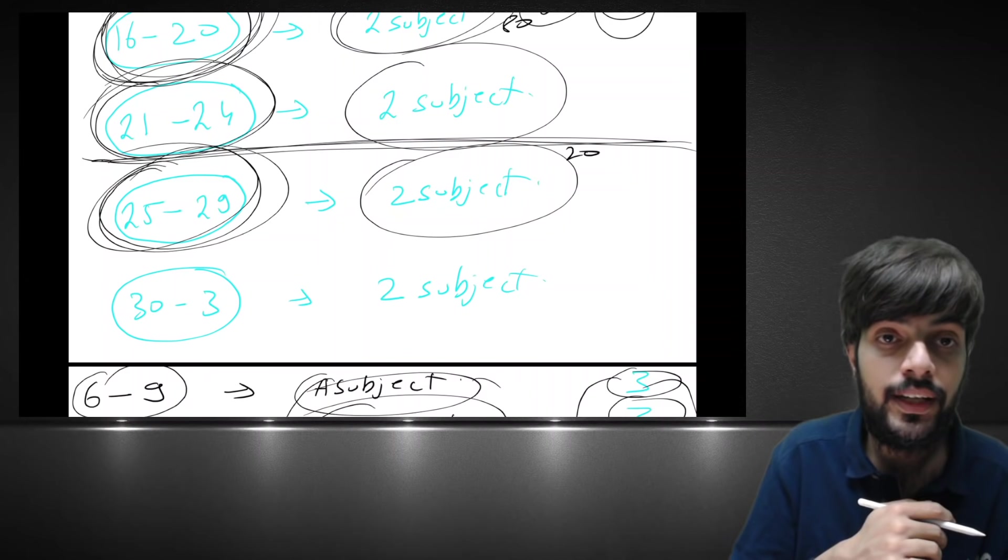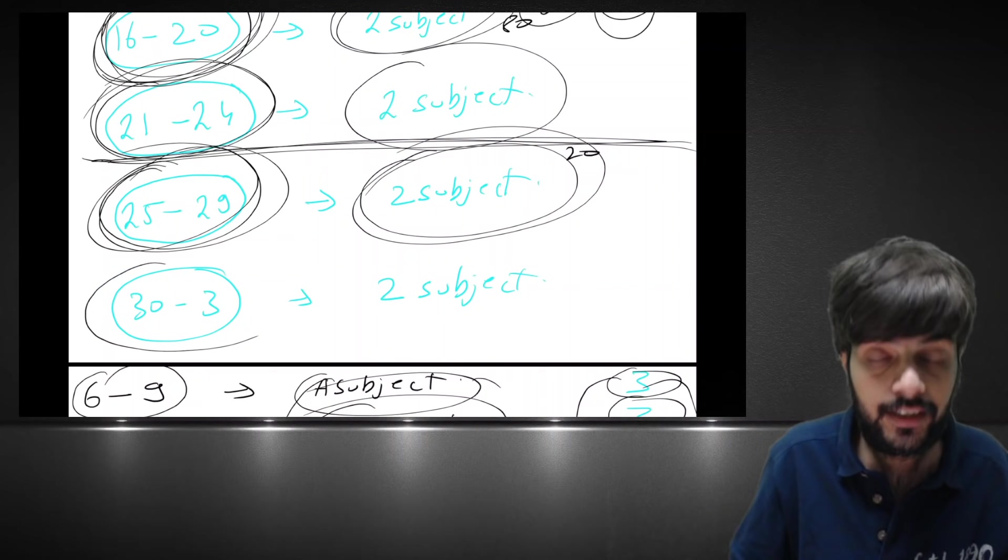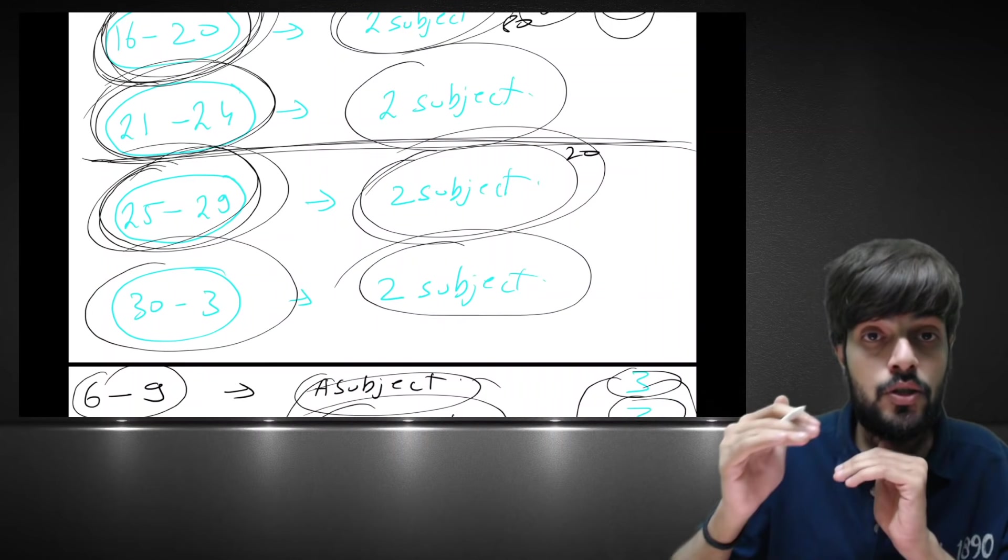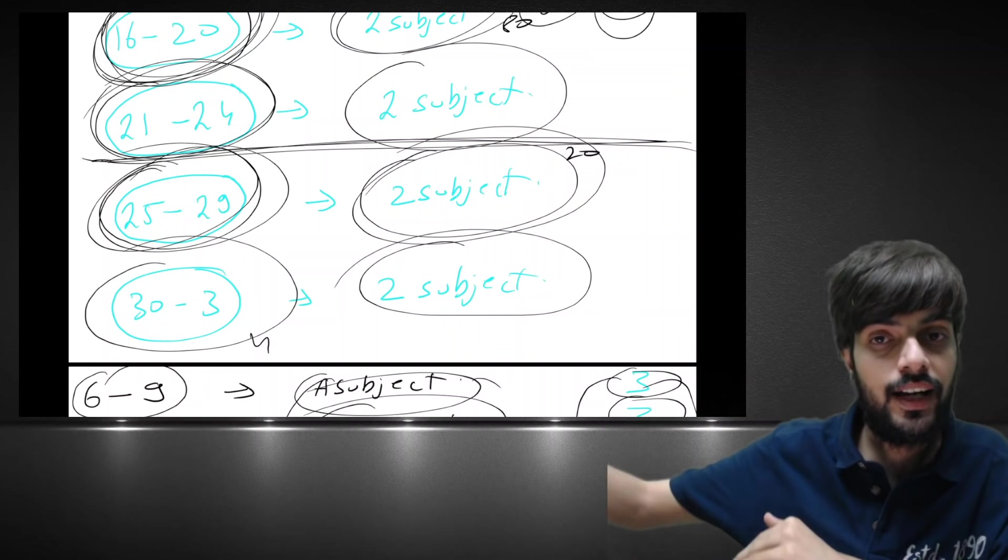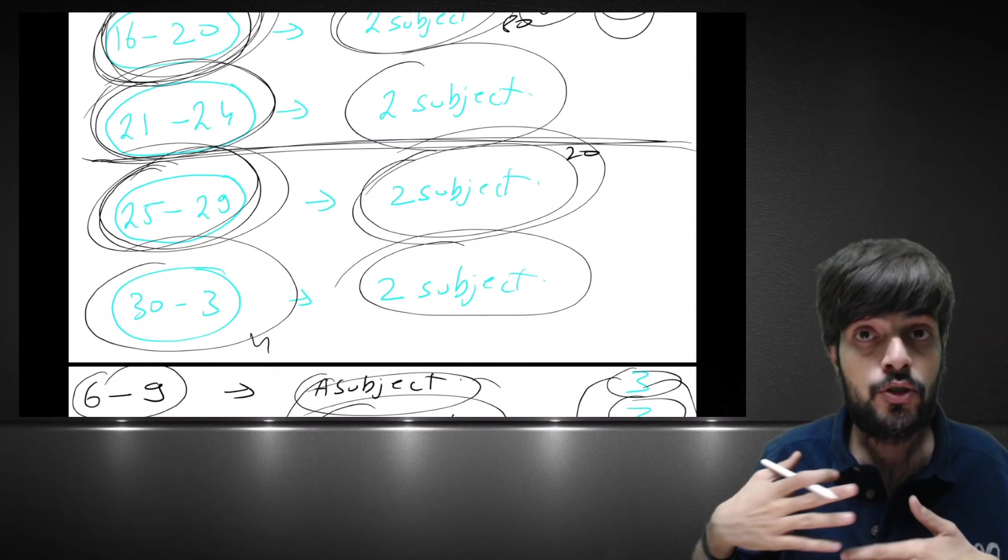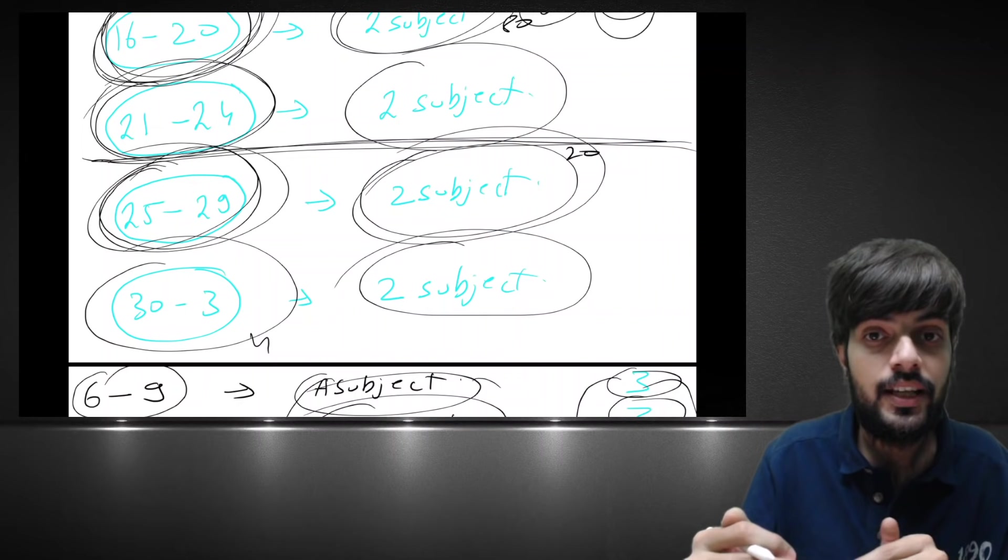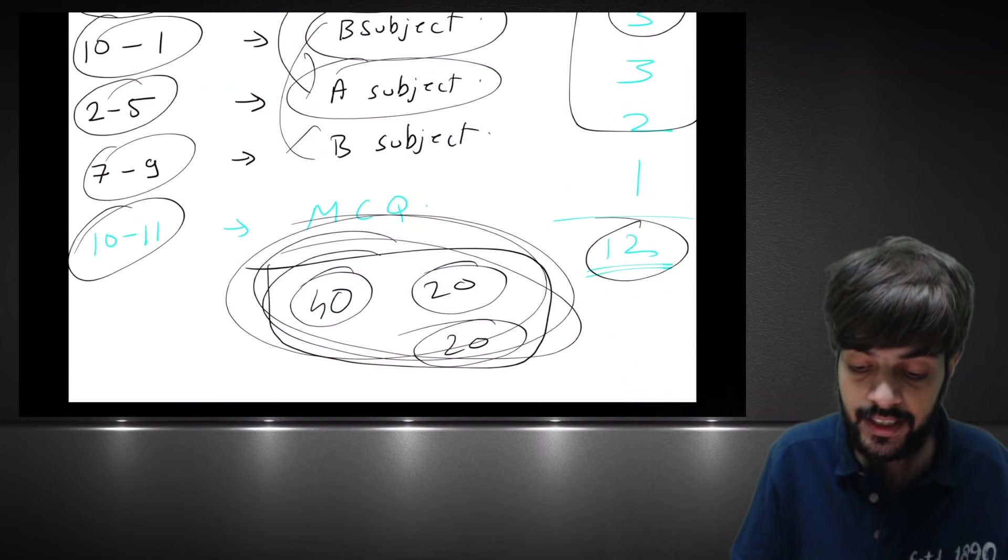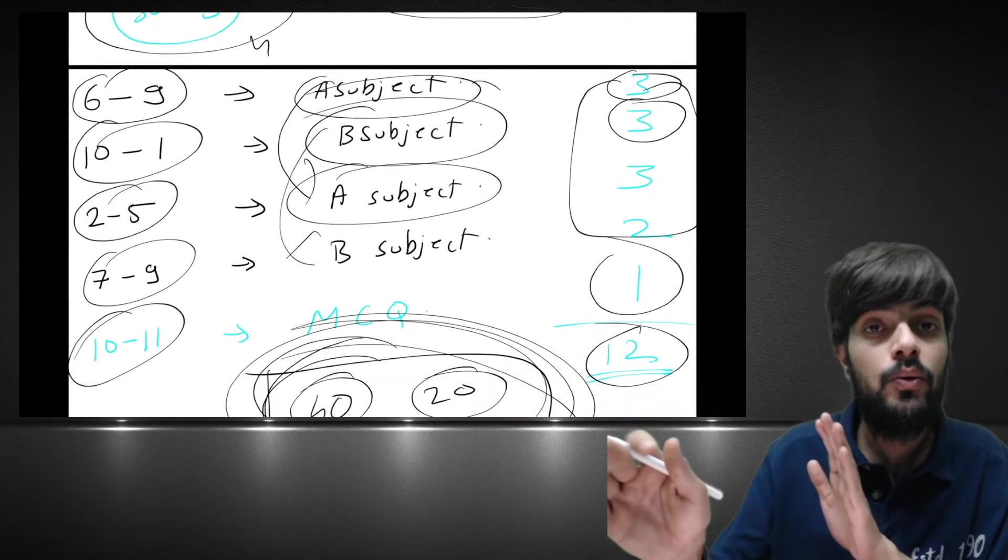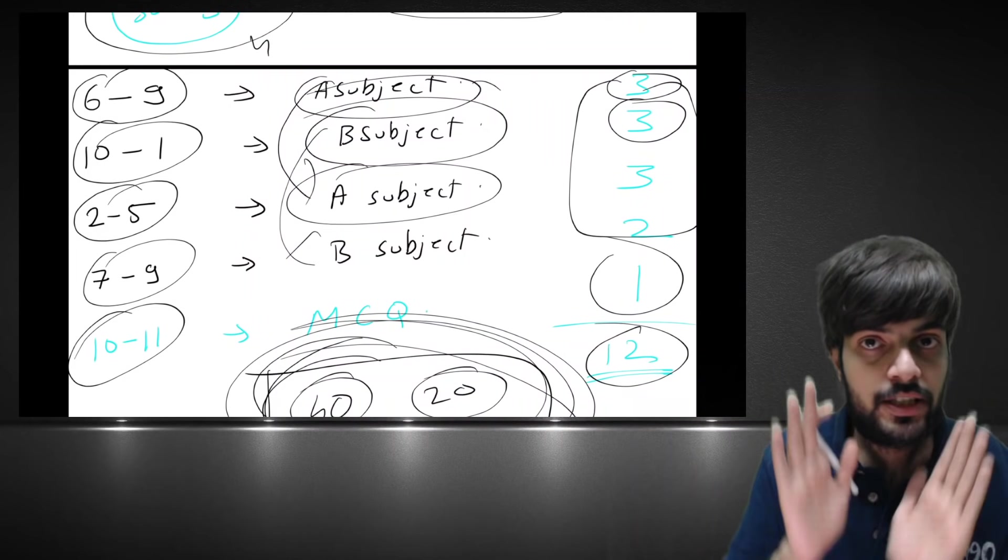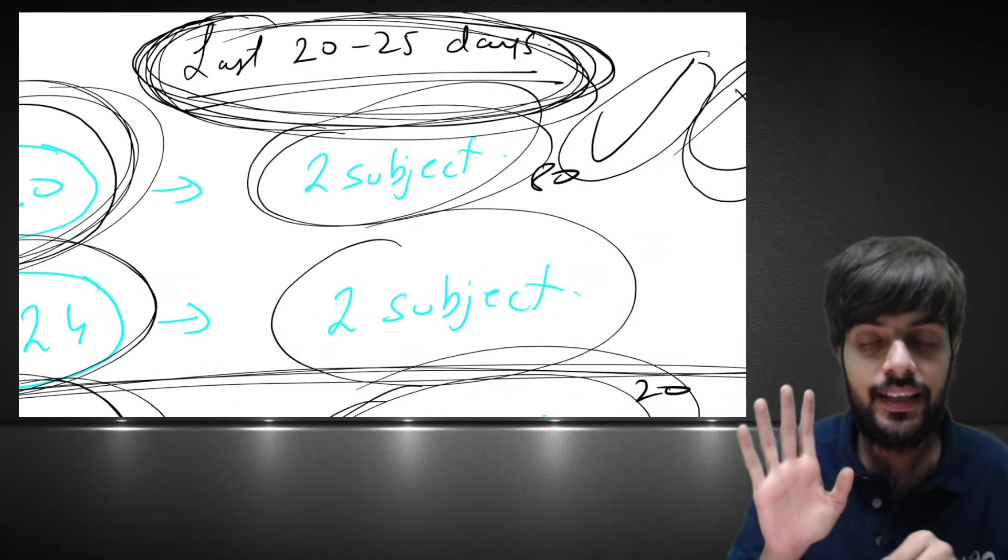Then again 25th to 29th you can do the two subjects which you earlier completed. Then 30 to 3rd December you can again complete the two subjects. So what is happening, two times revision of four days each is completed and from fourth you can start whatever first subject is there. So you will have a confidence that yes I have studied, I have done two times revision. I have given a dedicated study of one hour for MCQs and I am studying already around 10 to 11 hours. So this will help you. This will help you to clear the examination.